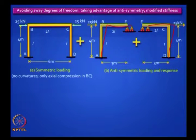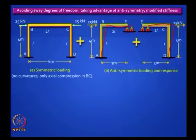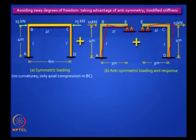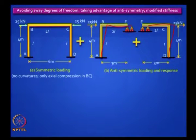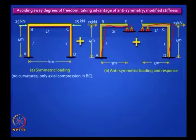We stopped here in the last session. The total lateral load of 50 kilo Newton can be divided into two parts: one which has a symmetric loading and the other which has an anti-symmetric loading. It is only the anti-symmetric loading that causes any bending in that frame, because the symmetric loading simply produces an axial compression in the beam BC. If you look carefully, you will find that there is a definite point of contraflexure exactly in the middle of the beam.